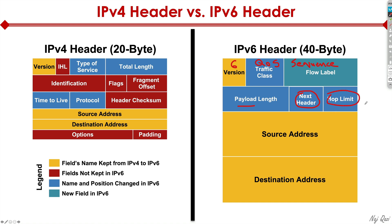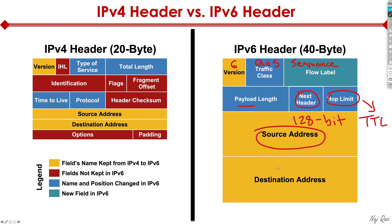Hop count — basically TTL in IPv4 — has been renamed to hop limit in the IPv6 header. And then we have a 128-bit source address, and then we have a 128-bit destination address.